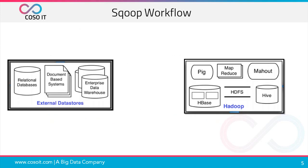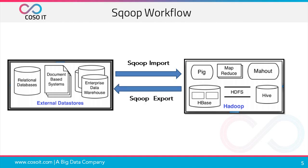Let's see the Sqoop workflow. On one side we have external data stores like relational databases, document-based systems like MongoDB, NoSQL, and data warehouses. On the Hadoop side we have HDFS, Hive, or HBase. So there is some exchange mechanism going between them. Sqoop import is the process of getting data into Hadoop from data sources, and Sqoop export is the process of taking it out of Hadoop and putting it into relational stores. Now we will see how we perform Sqoop import and export using Sqoop commands.